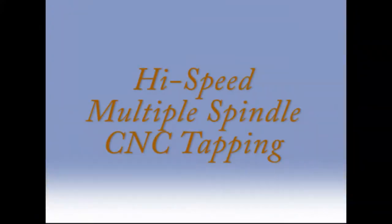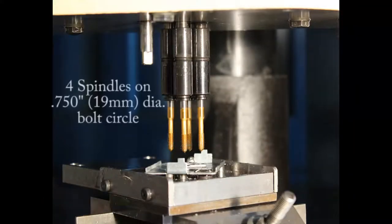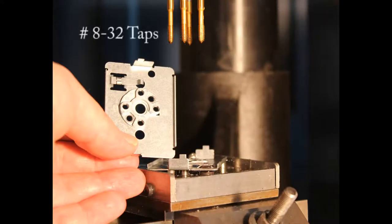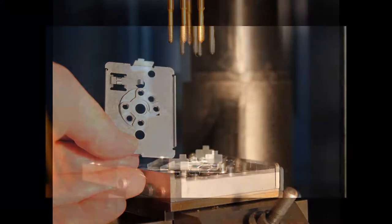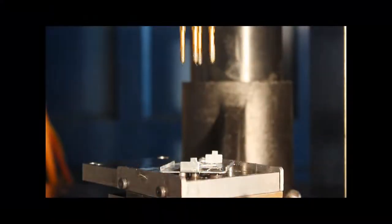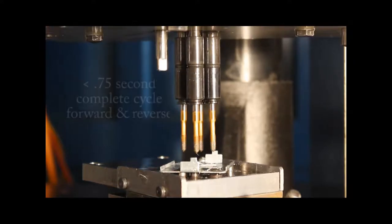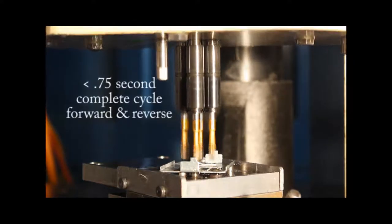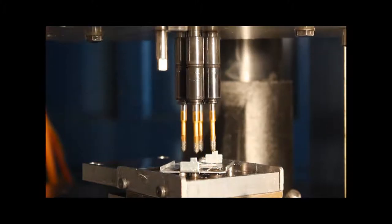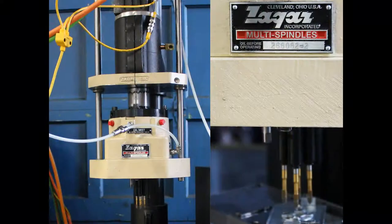High-speed multiple spindle CNC tapping. In this example a Zagar gearless four spindle tapping head and a vertical MQ150 CNC drill tap station are applied to tapping four number 832 holes in a steel stamping. The spindles are equally spaced at 0.750 inch, 19 millimeter diameter, on a bolt circle. Each spindle features the quick change Zagar standard tap holder.